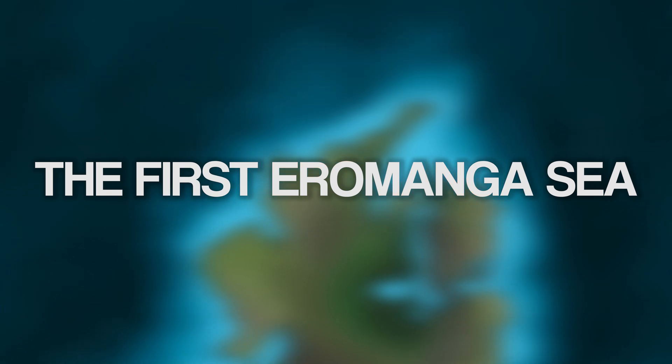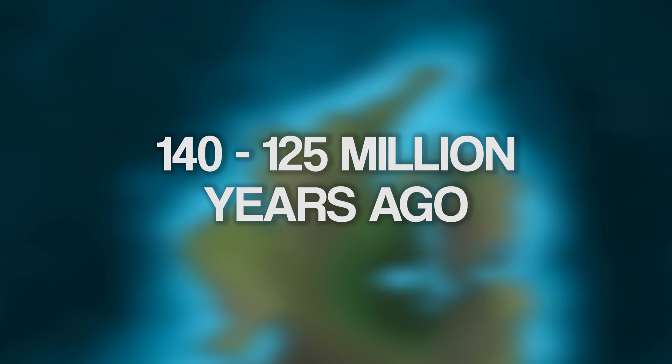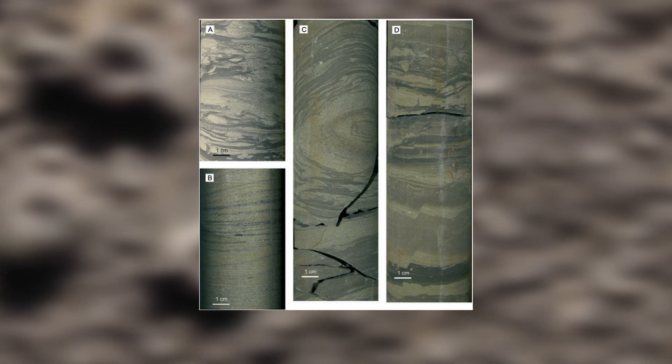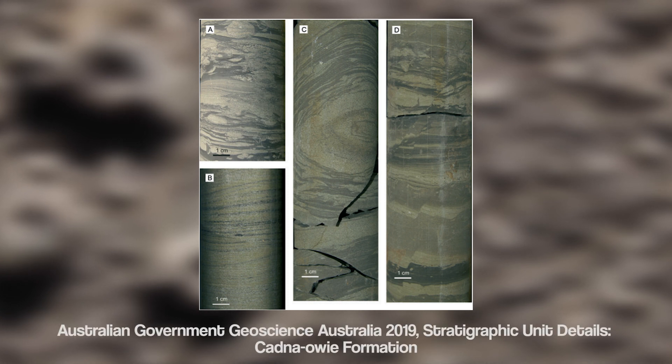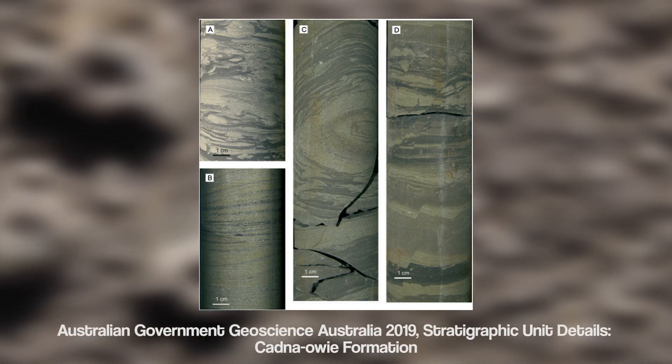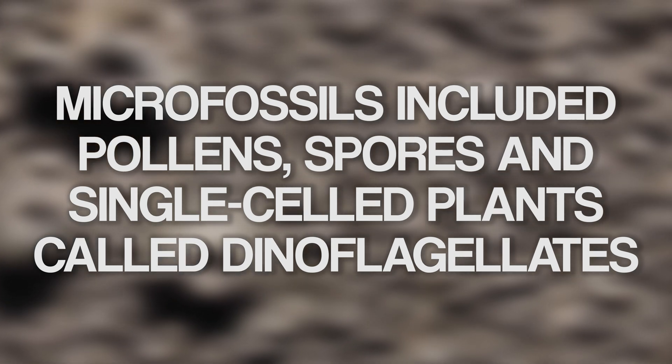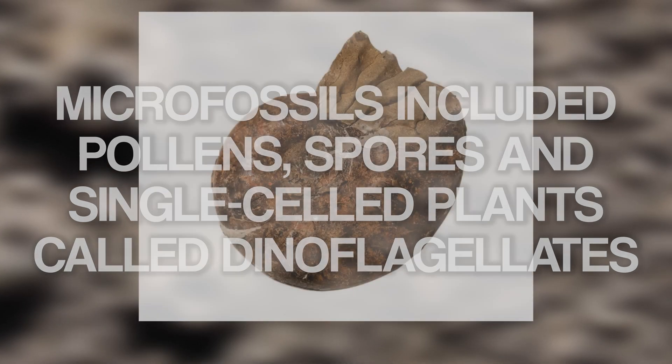The first inland sea took place between 140 and 125 million years ago. Marine rocks from the Kadna'ohe Formation of Queensland are dated to this time. The shallow sea was only a narrow strip, beginning in northern Queensland and extending to northern New South Wales and eastern South Australia. There's not much fossil evidence from the Kadna'ohe Formation because most of the rocks simply haven't risen to the surface — the first two inland seas represent the deepest rock layers of the five. Microfossils helped date the first inland sea, including pollens, spores, single-celled plants called dinoflagellates, and ammonites.